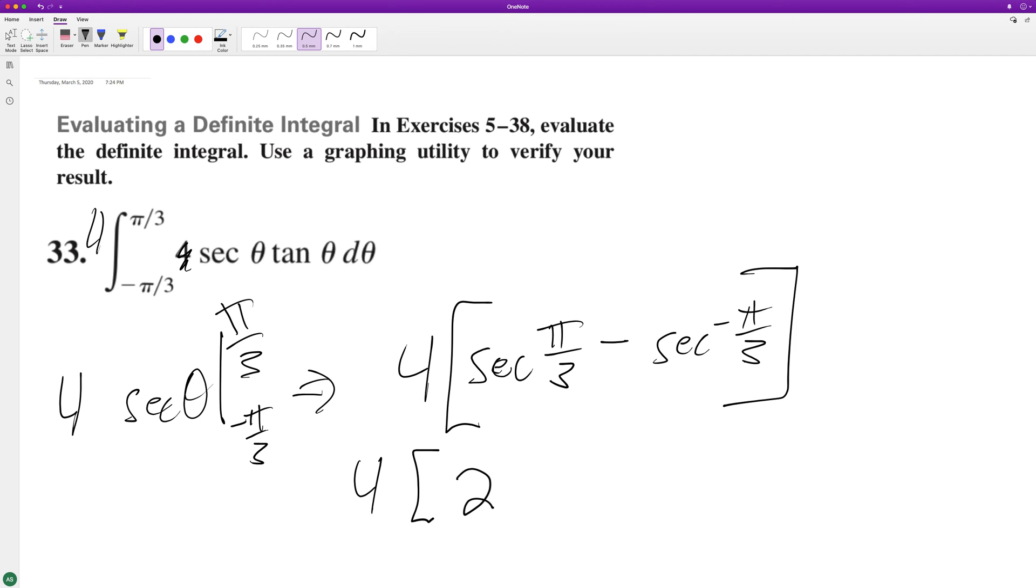This ends up being two, and the secant of, well both quadrant one and four are positive, so it's going to be two minus two. So it's going to be four times zero, which is equal to zero, and that's it.